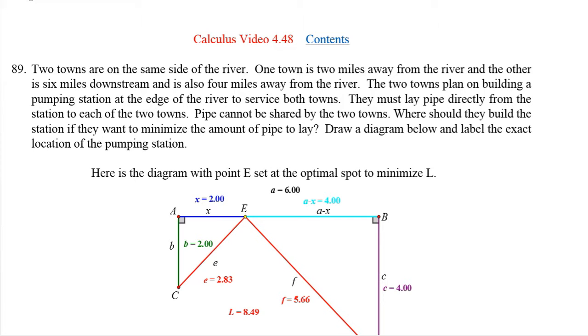The two towns plan on building a pumping station at the edge of the river to service both towns. They must lay pipe directly from the station to each of the two towns. Pipe cannot be shared by the two towns. Where should they build the station if they want to minimize the amount of pipe to lay? Draw a diagram and label the exact location of the pumping station.